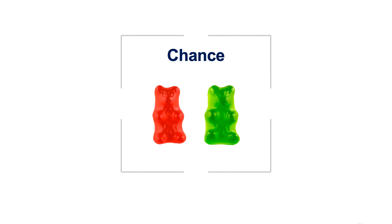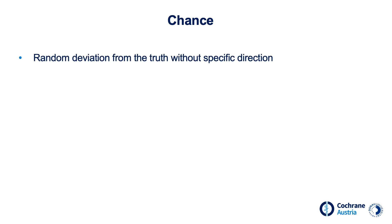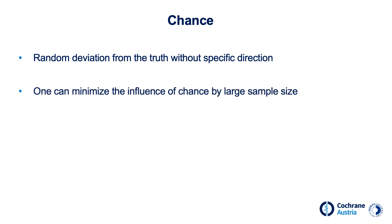Another source of error in studies is chance, also called random error. The result of a study may coincidentally differ from the true effect in the population just by chance. This random deviation has no definite direction — if you were to do many of the same studies, some would overestimate the effect, others underestimate, and others would appreciate it correctly. One can minimize the influence of chance by using a large sample size.